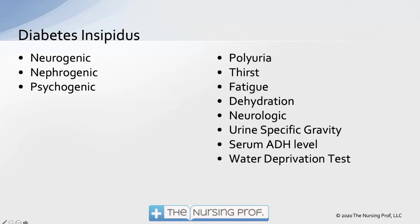Diabetes insipidus can come from one of three different causes. It can be neurogenic, involving brain pathology. It can be nephrogenic, where antidiuretic hormone is not having an effect on the kidneys — the kidneys are resistant to it, so they don't retain fluid. Psychogenic is another potential cause, where DI is triggered by severe stress, panic, or psychological events.